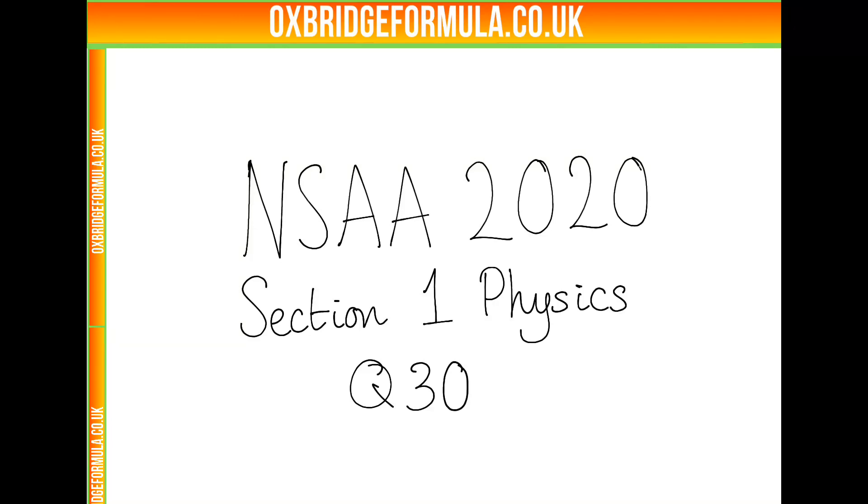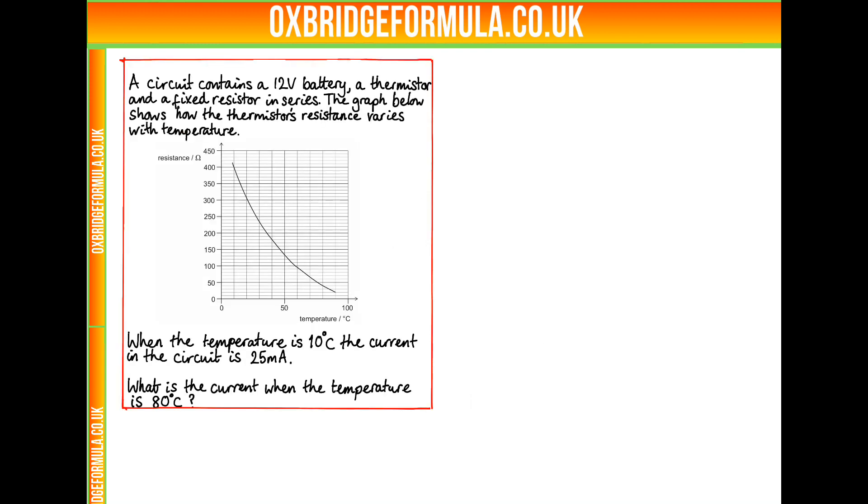This question is taken from the ENSA 2020 Section 1 paper, question 30 of the physics subsection. A circuit contains a 12 volt battery, a thermistor, and a fixed resistor in series. The graph below shows how the thermistor's resistance varies with temperature.